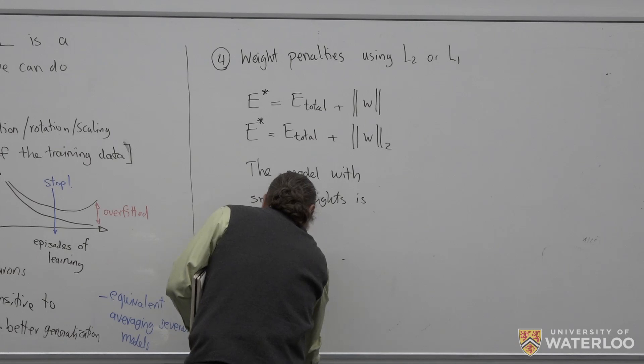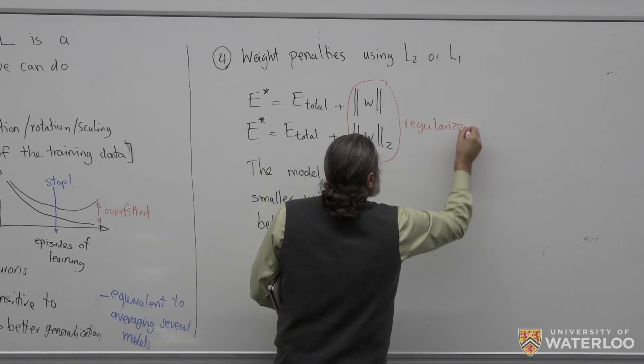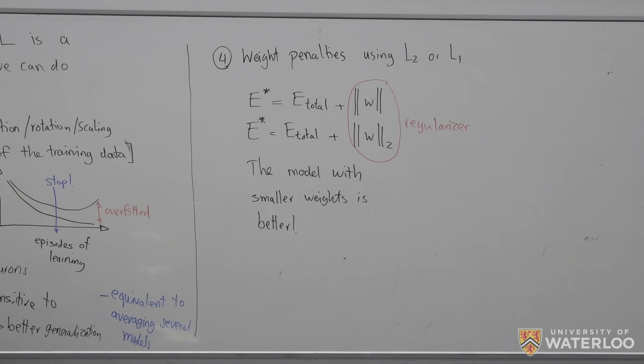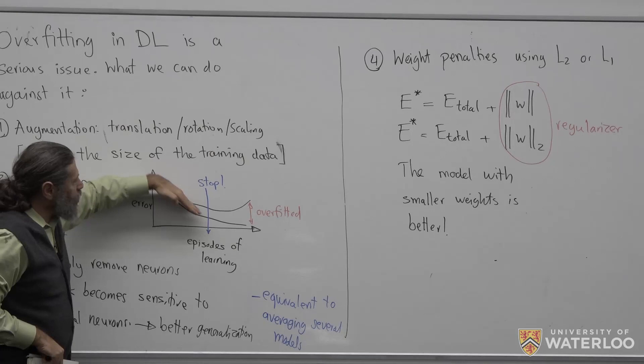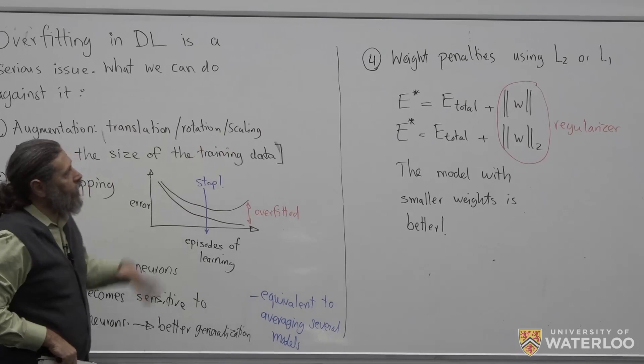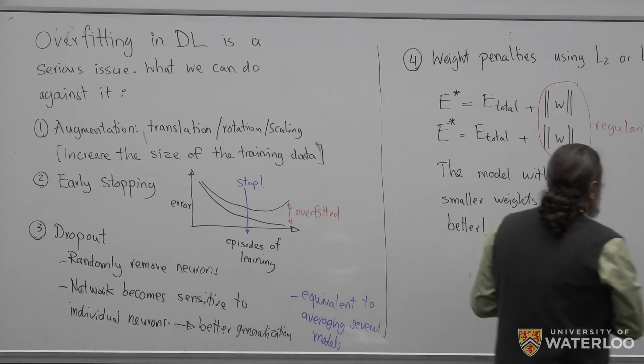These are our regularizers — as we discussed at the beginning when we talked about generalization and overfitting. They help the network avoid getting into local minima from greed and overfitting. If I try to minimize total error while also keeping a small weight space, that has a bigger chance of being a good model.